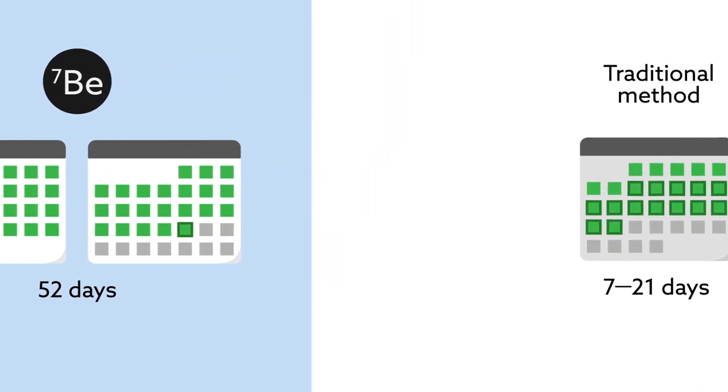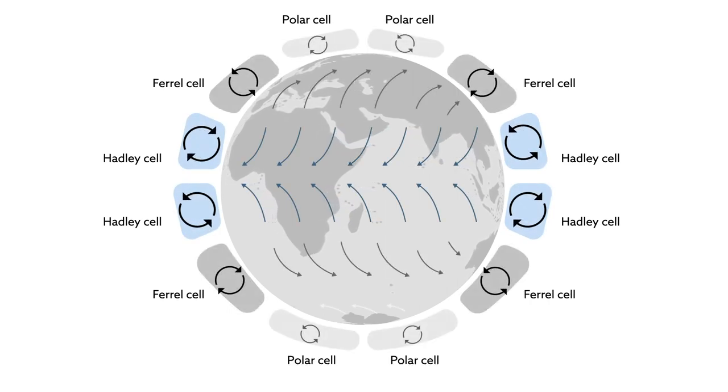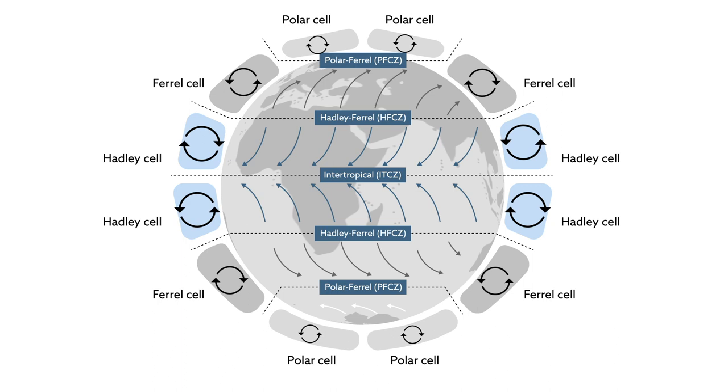This unusual weather-tracking approach works because of how air circulates on Earth. Each hemisphere features three large-scale patterns, or cells—the Hadley, Ferrel, and Polar cells. Where two cells meet is a convergent zone.